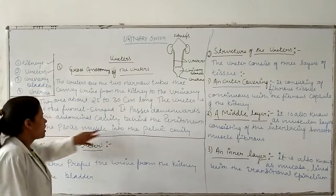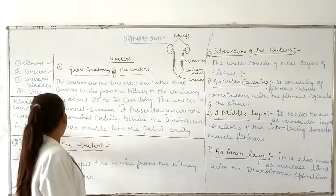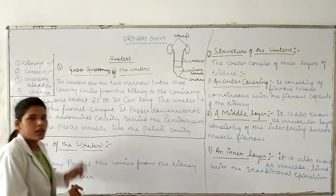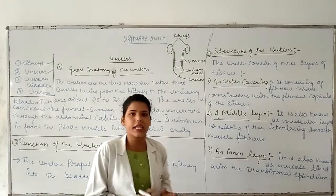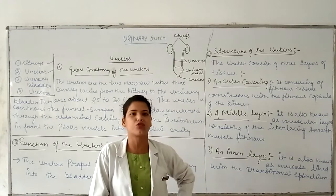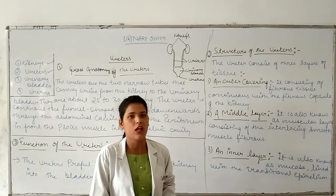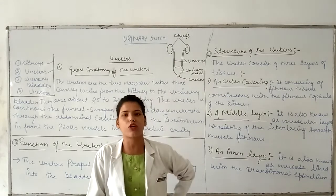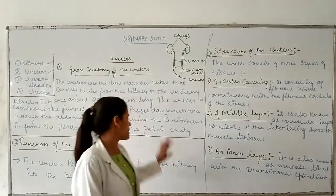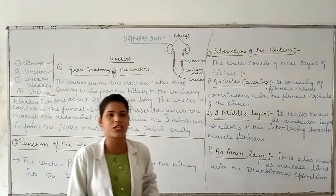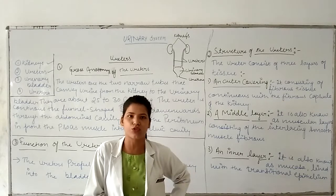This is the peritoneum. The ureters are not organs within the peritoneum but lie posterior to it. The ureters are present in a retroperitoneal position.